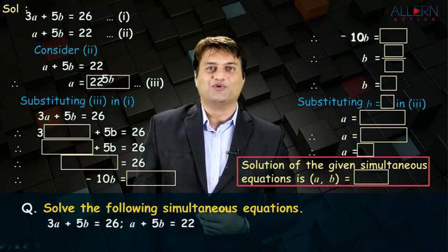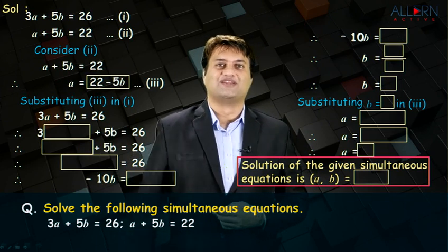5b goes to the other side. So, it becomes 22 minus 5b. And that is your equation number 3.